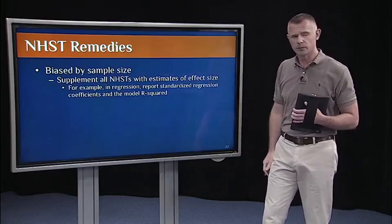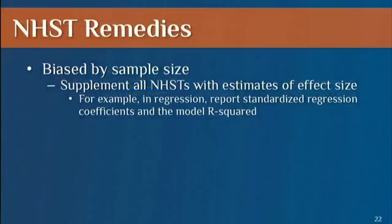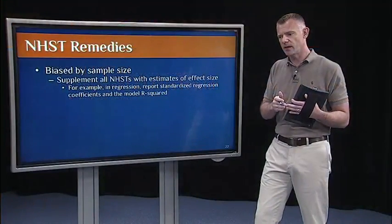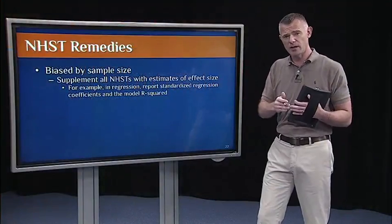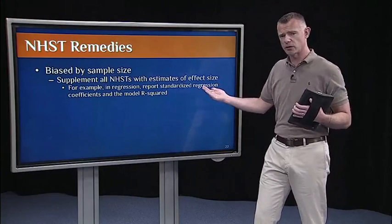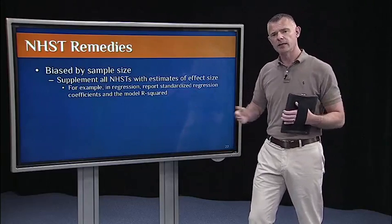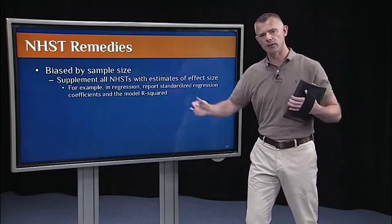So, first, let's go back through the problems. So, bias by sample size. A simple thing to do, and this is common now in most peer-reviewed journals, is whenever you report an NHST, also report estimates of effect size. Because effect size tell you not just if an effect is significant or not, but it tells you about the magnitude of the effect. So, for example, in regression, we'll report standardized regression coefficients and the model R squared. That tells us about the magnitude of effects.